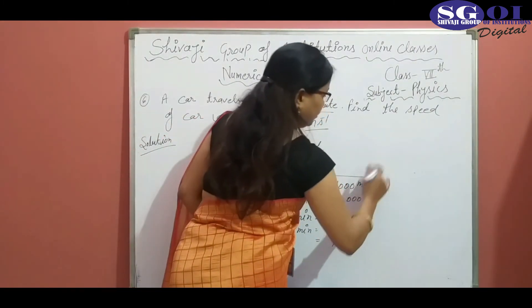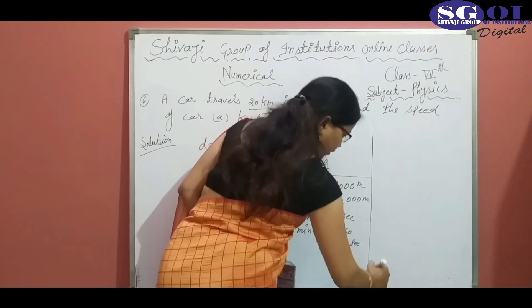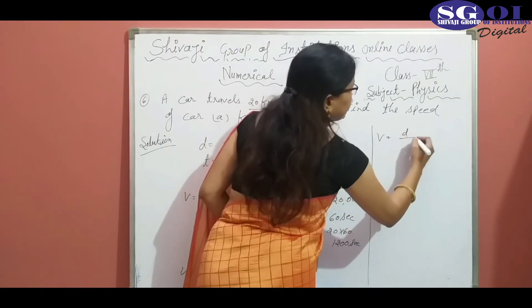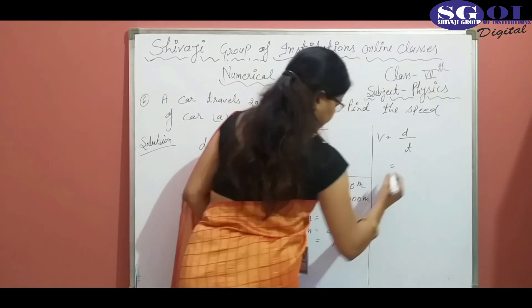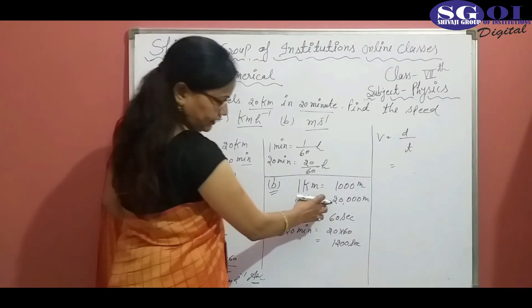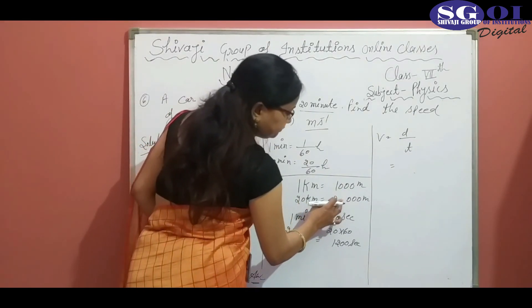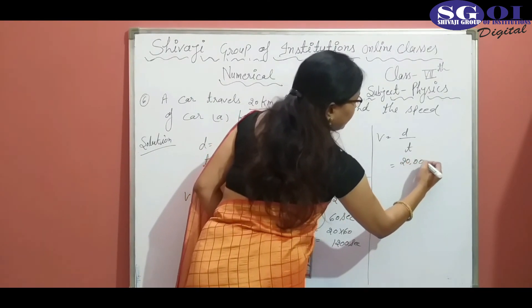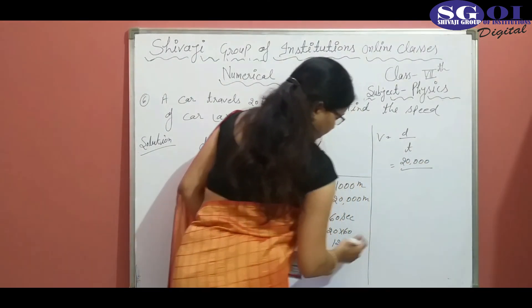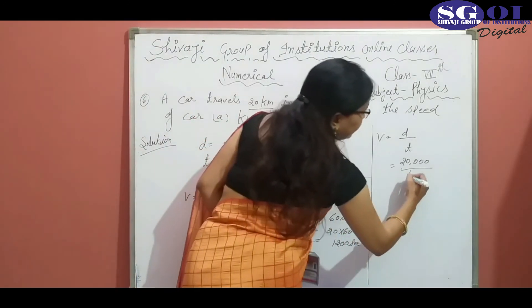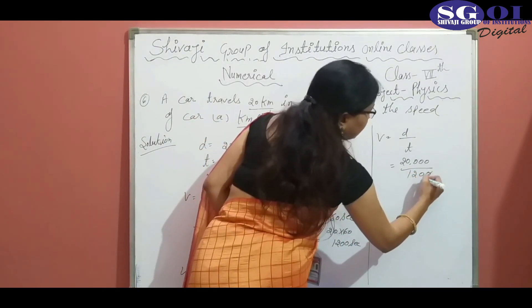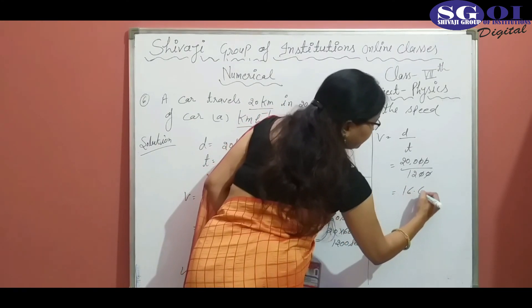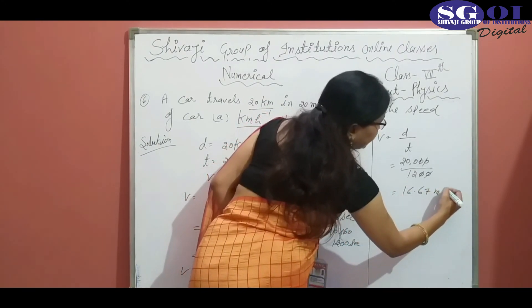Now we will apply the formula: speed equals distance divided by time. Here, distance is 20,000 and time is 1200. After dividing, we get 16.67 meter per second.